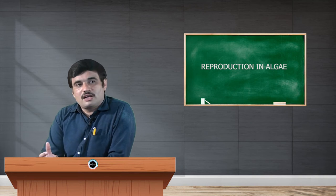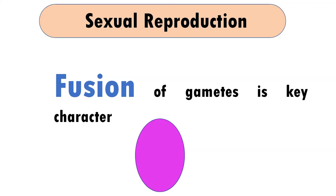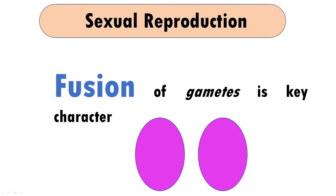Next, sexual reproduction. Here fusion of gametes is the key character. The two gametes are represented as two oval shapes — one termed as a male gamete and another as a female gamete. In the fertilization process, the two gametes fuse with each other to form a zygote, and that particular zygote becomes a new plant.